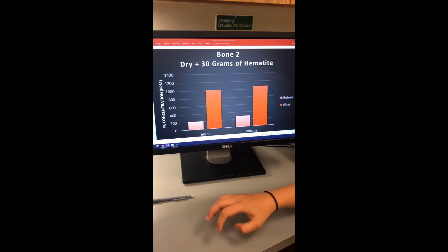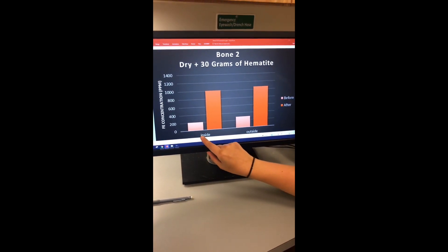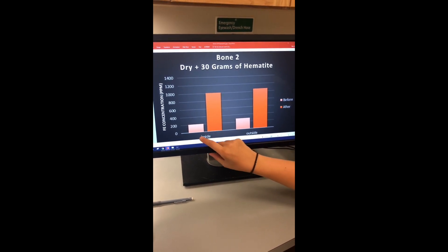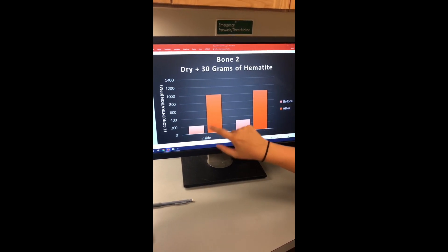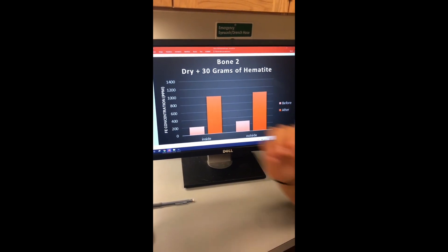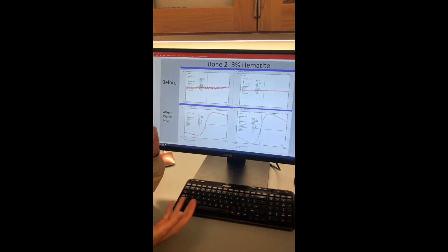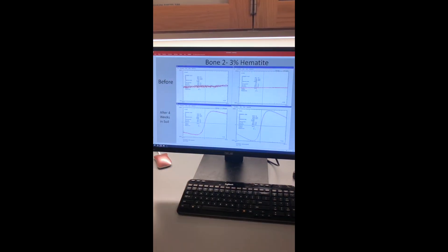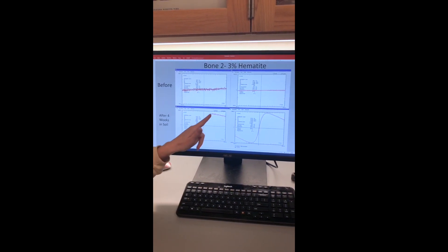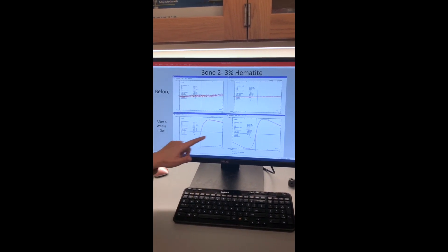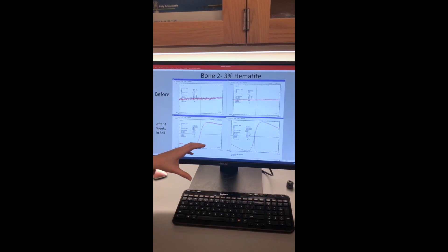Here are the PXRF results for bone 2. Bone 2 was in dry conditions with 30 grams or 3% of hematite added to it. We can see clearly that the iron content increased in that four week period both inside and outside the bone. Now, let's compare that to our AGM results. For the AGM with bone 2, we see that before this four week period, there are really no measurable trace amounts of hematite. However, after the four weeks, we actually see a hysteresis loop forming for both of them. This means that the AGM is indeed picking up hematite in both of these samples, and that leaching has occurred.